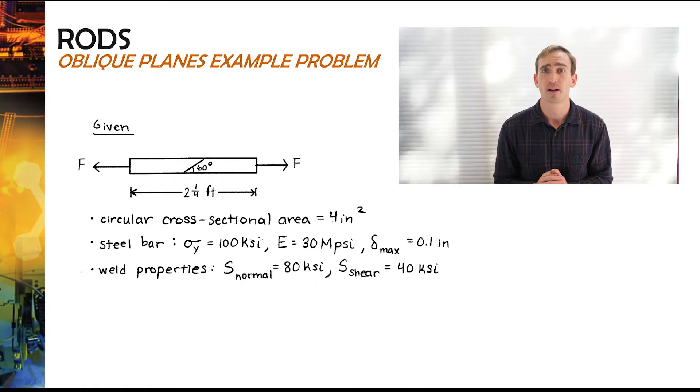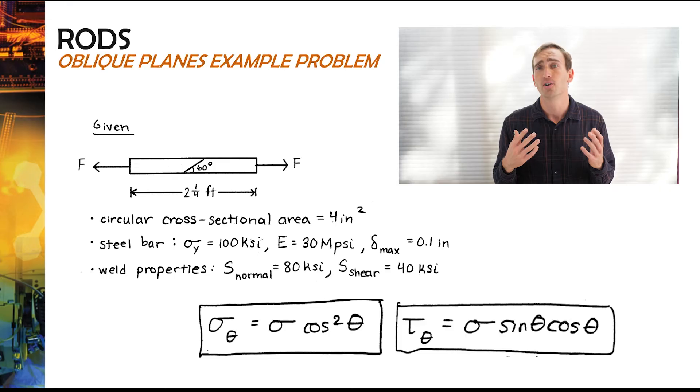Now let's look at this example problem right here. I'll jump to a paper solution so we can analyze this particular stepped rod problem, which it's not really a stepped rod, it's just a single bar, but there is a weld of what we're shown 60 degrees. Let's figure out how the system might fail and apply our new equations.